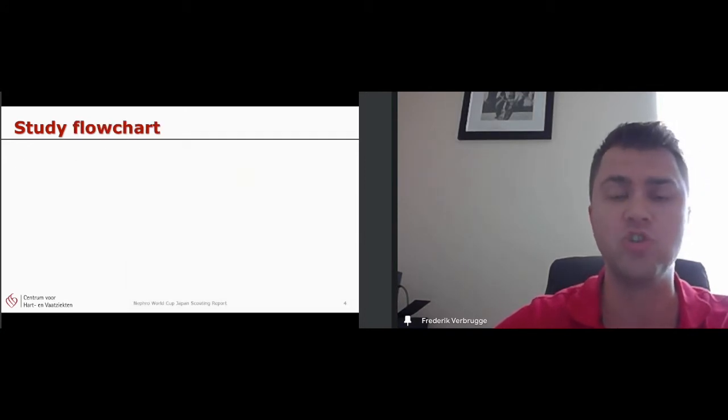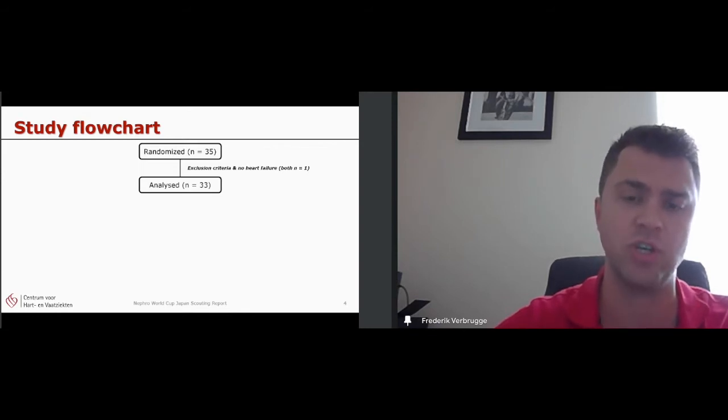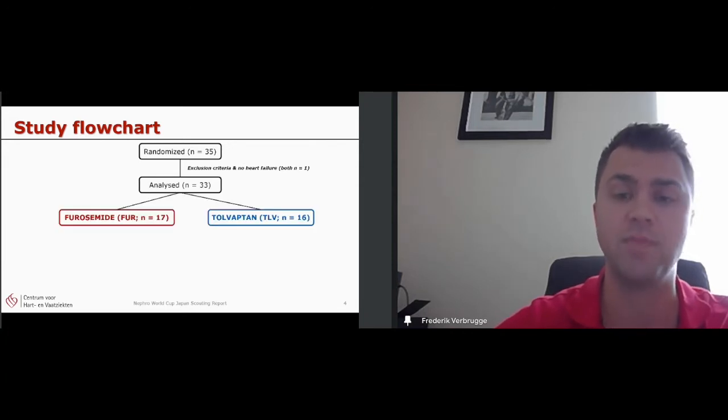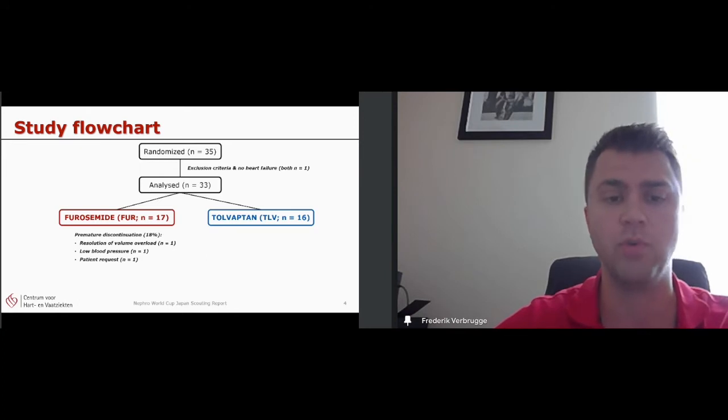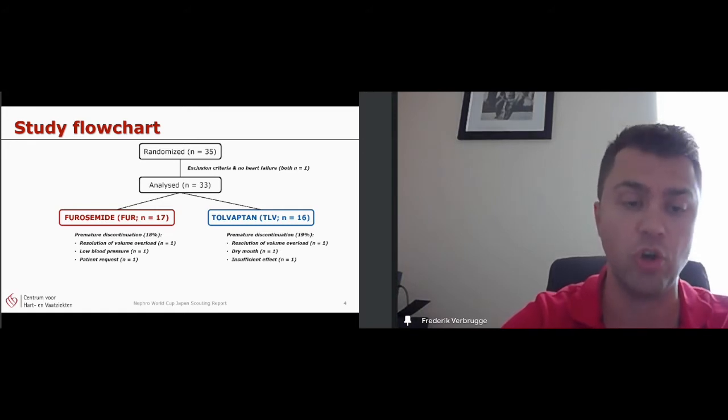When we look at the flow chart through the study, they randomized 35 patients. Two of them were excluded because they didn't fulfill the inclusion and exclusion criteria. So only 33 were analyzed, 17 in the furosemide arm and 16 in the Tolvaptan arm. And there was some considerable dropout, around 18-19%. So in the furosemide group, there was a patient who quitted early because of resolution of volume overload, one because of low blood pressure and one on patient request. And in the Tolvaptan group, also there was one patient who had earlier resolution of volume overload. There was one with dry mouth syndrome and one who quitted because of an insufficient effect.